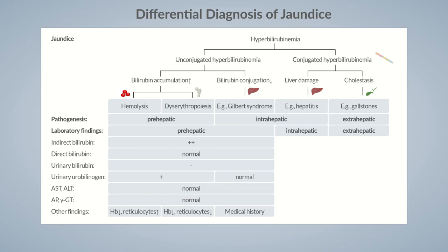Let's move on to intrahepatic jaundice. Hepatocyte damage leads to increased levels of both direct and indirect bilirubin. In the hepatocyte, there is simultaneous uptake, conjugation, and excretion of bilirubin, with impairment of all three processes in intrahepatic jaundice. However, the rate-limiting step is the active transport of bilirubin from the hepatocyte to the bile canaliculi. Therefore, the predominant feature is reduced excretion of bilirubin, whereas conjugation is impaired to a lesser degree. Direct bilirubin can re-exit the hepatocyte through blood vessels, resulting in increased serum direct bilirubin levels.